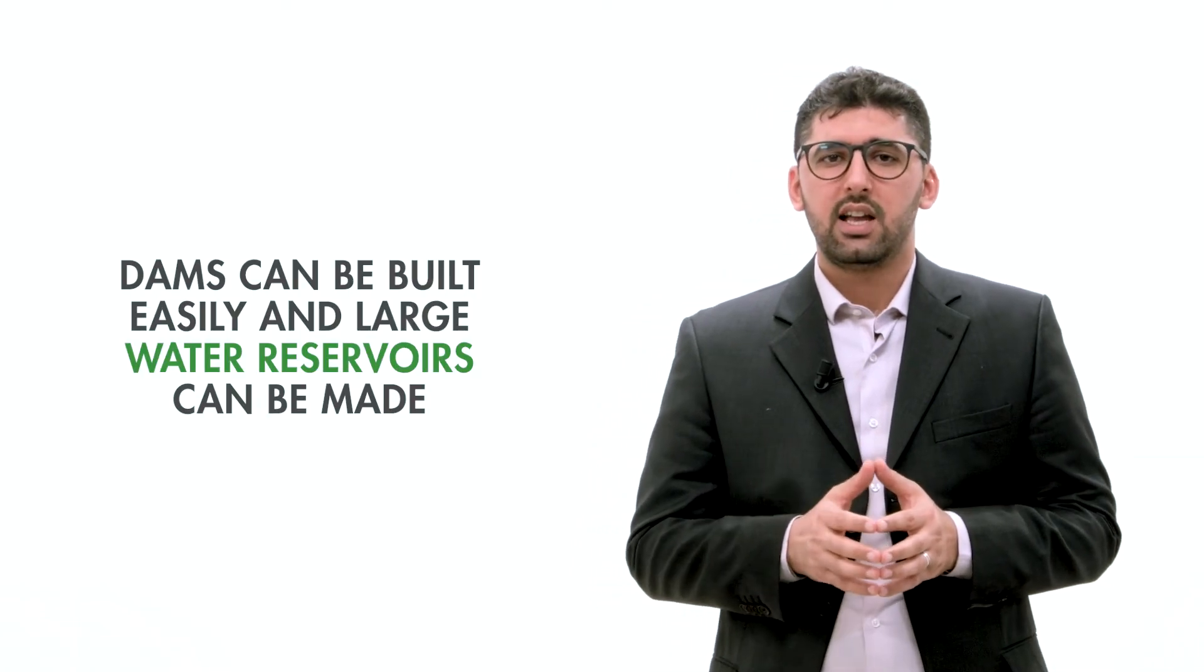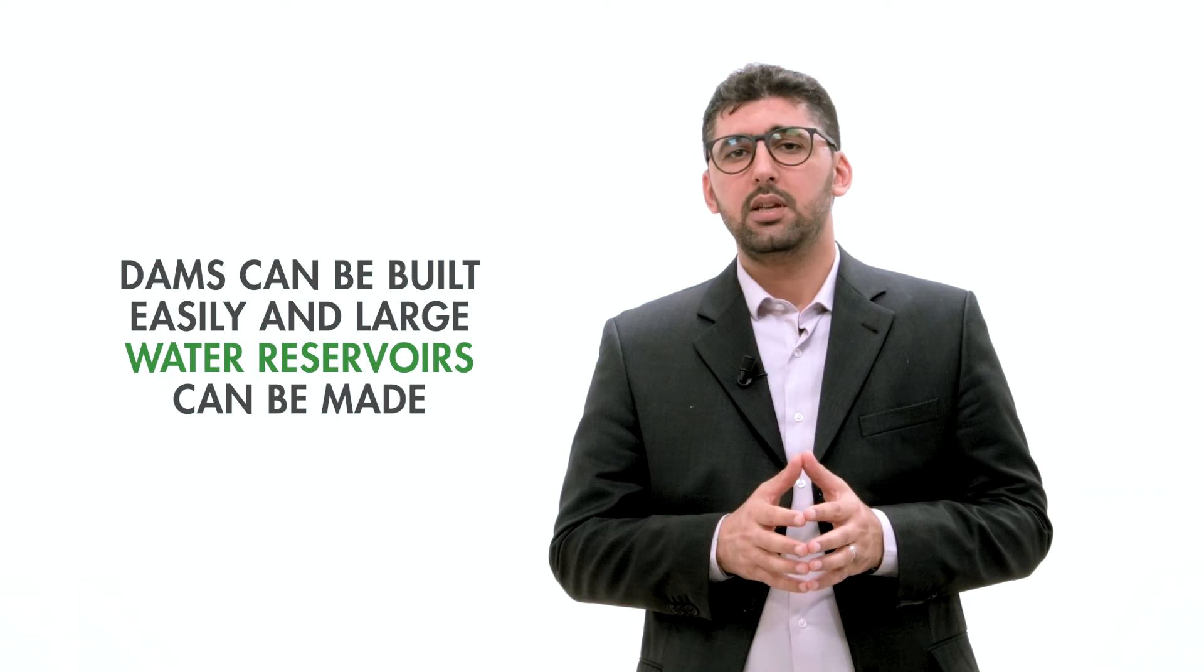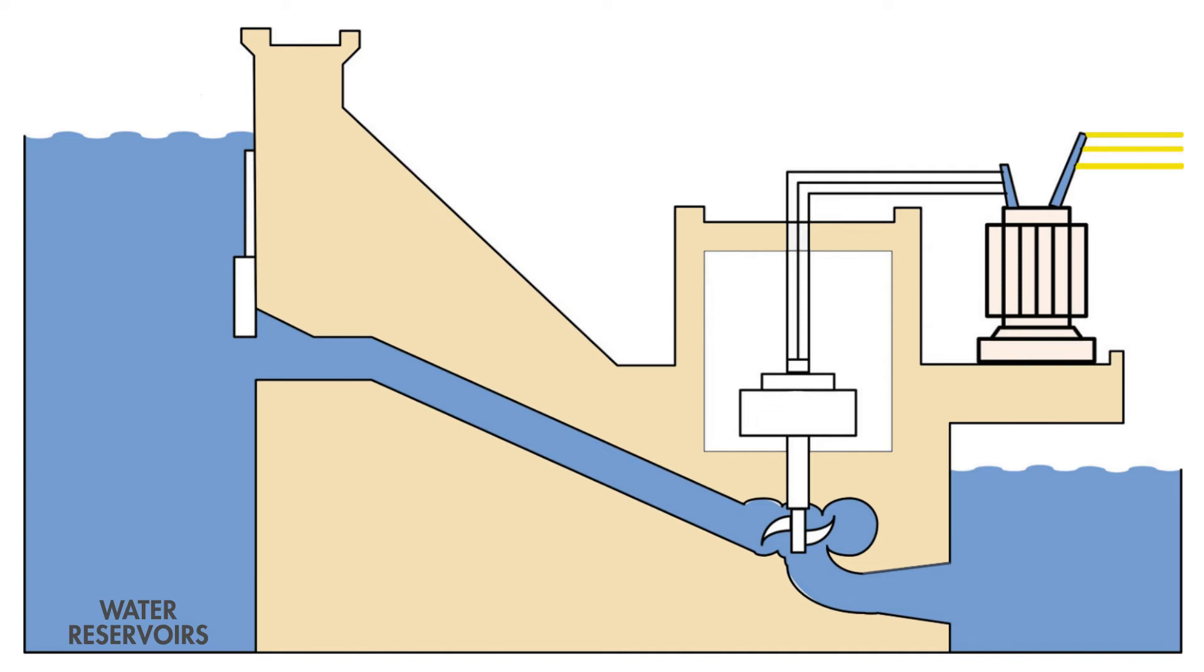A power plant which uses the potential energy of the water to generate electricity is called a hydroelectric power plant. Hydroelectric power plants are usually located in hilly areas where dams can be built easily and large water reservoirs can be made. In a hydropower plant, water head is created by building a dam across a river or a lake. From the dam, the water is fed to the water turbine. The water turbine changes the kinetic energy of the falling water into mechanical energy at the turbine shaft.